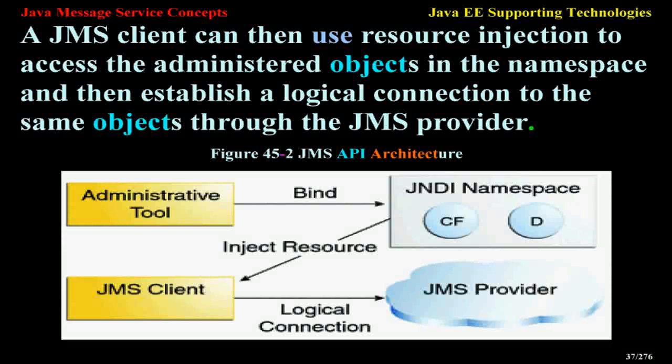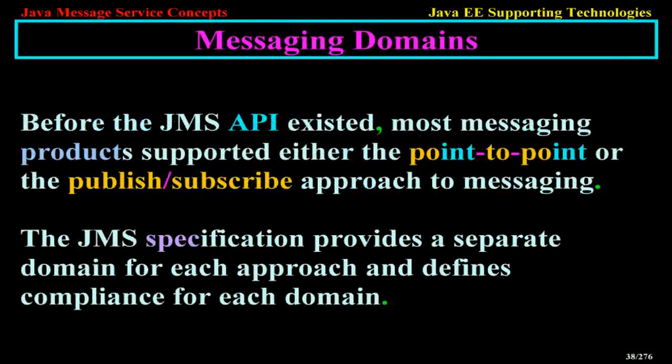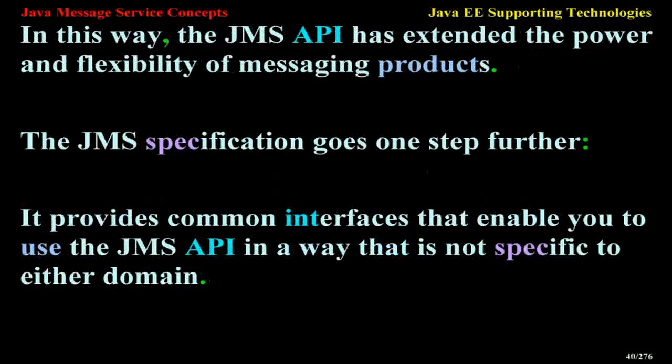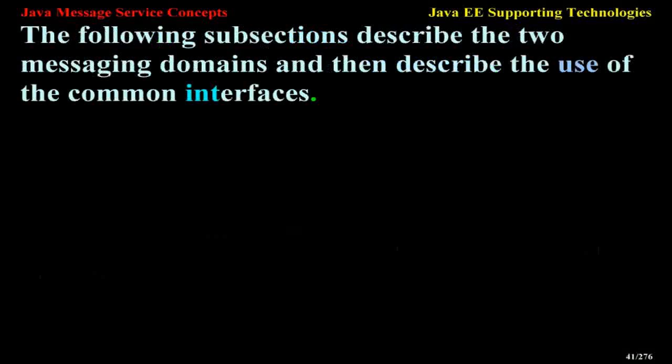Messaging Domains. Before the JMS API existed, most messaging products supported either the point-to-point or the publish-subscribe approach to messaging. The JMS specification provides a separate domain for each approach and defines compliance for each domain. A standalone JMS provider can implement one or both domains. A Java EE provider must implement both domains. Most implementations of the JMS API support both the point-to-point and the publish-subscribe domains, and some JMS clients combine the use of both domains in a single application. The JMS API also provides common interfaces that enable you to use the JMS API in a way that is not specific to either domain.